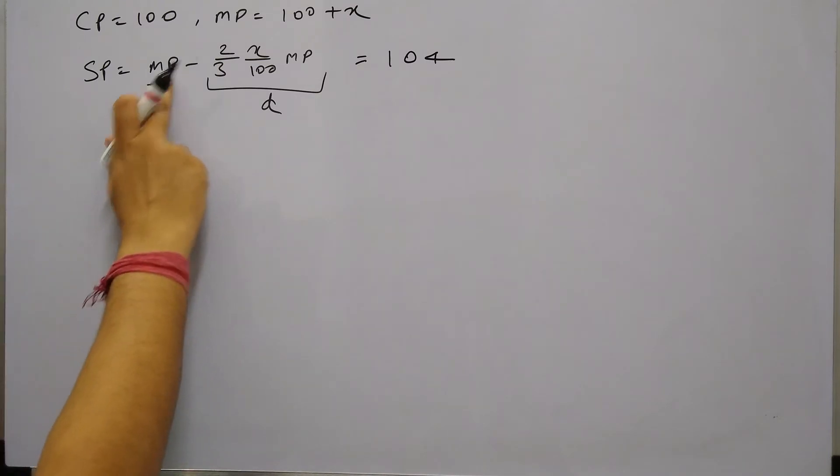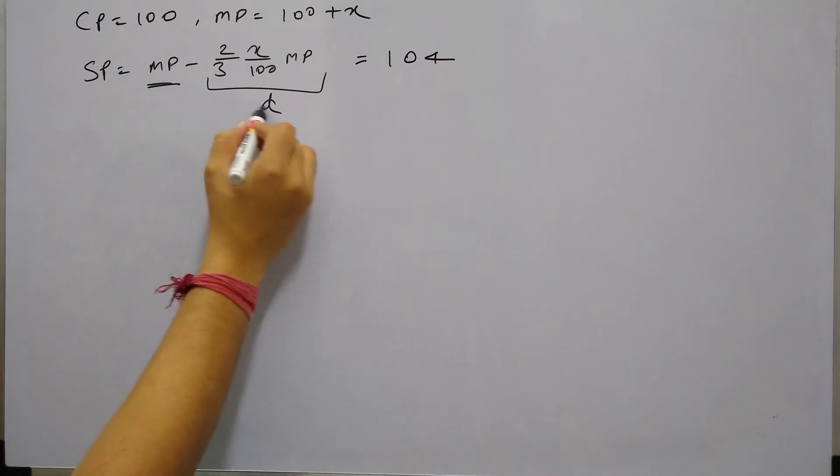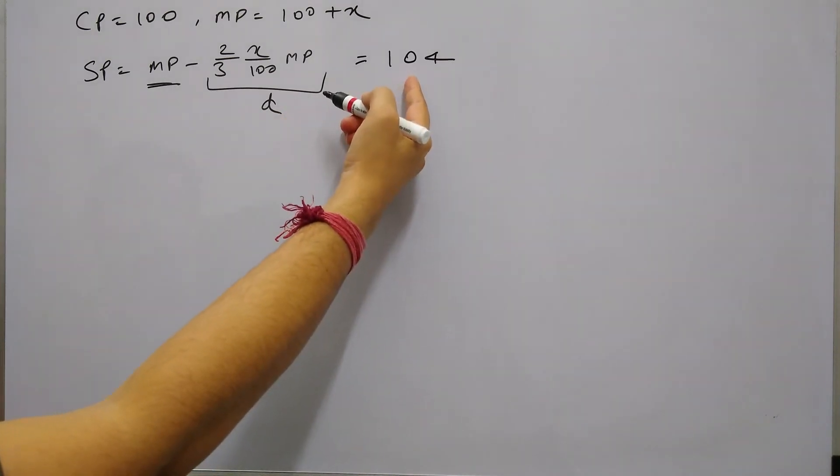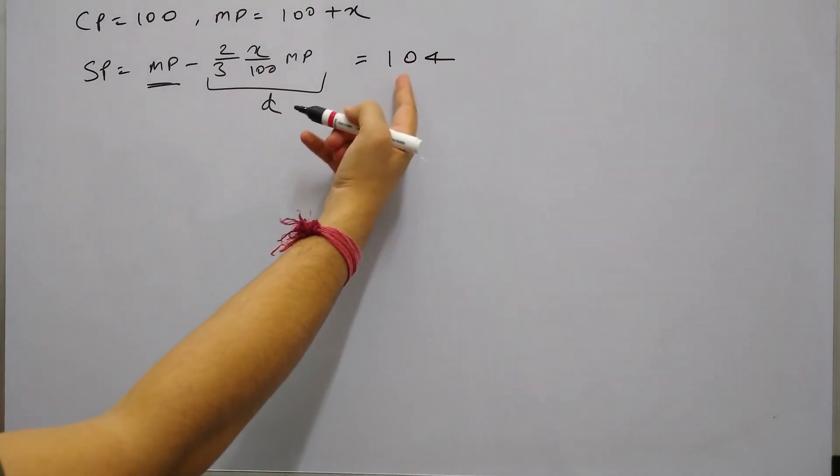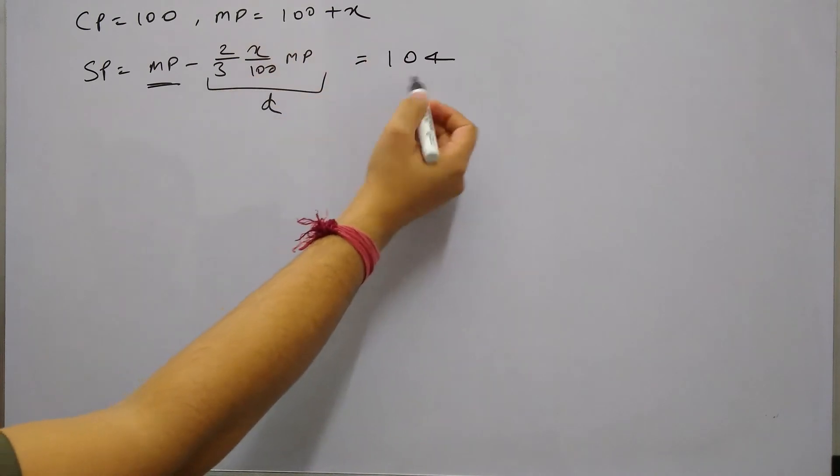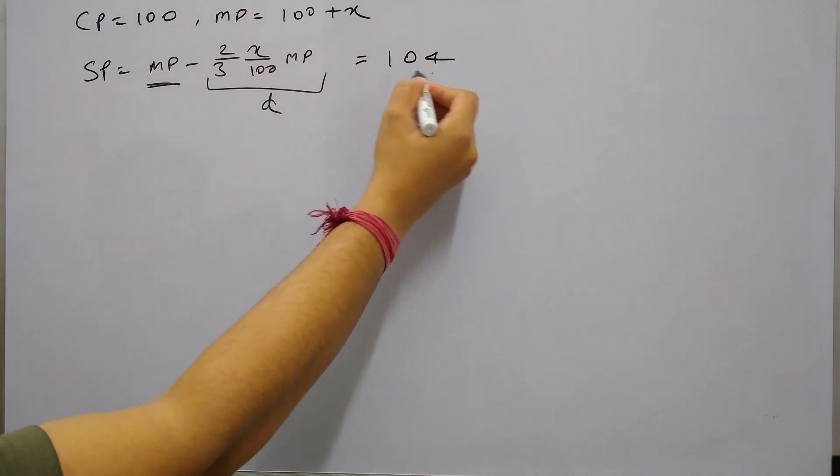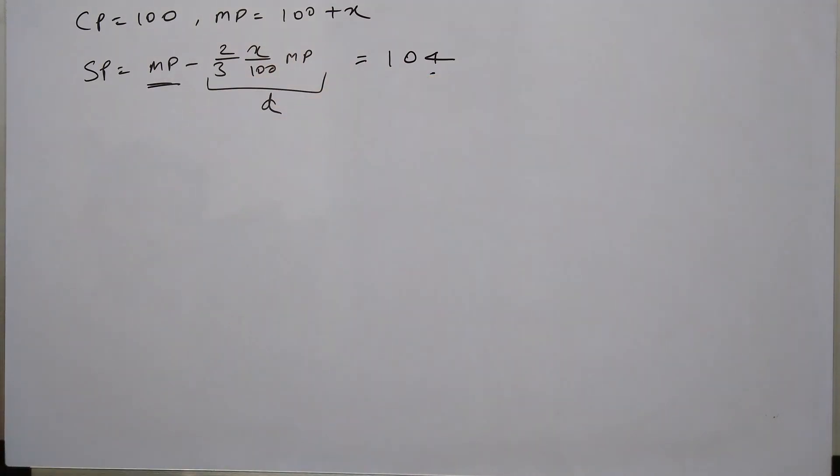And now we can just replace this MP with 100 plus x. So this is simple, MRP minus discount is selling price. And selling price is 104 where 100 rupees was the cost price and 4 rupees is the profit added. So selling price total is 104.